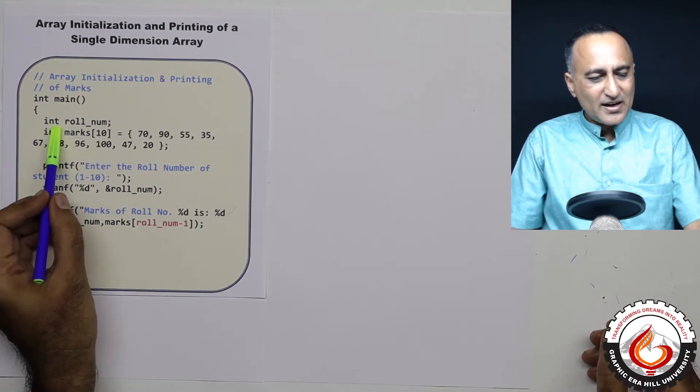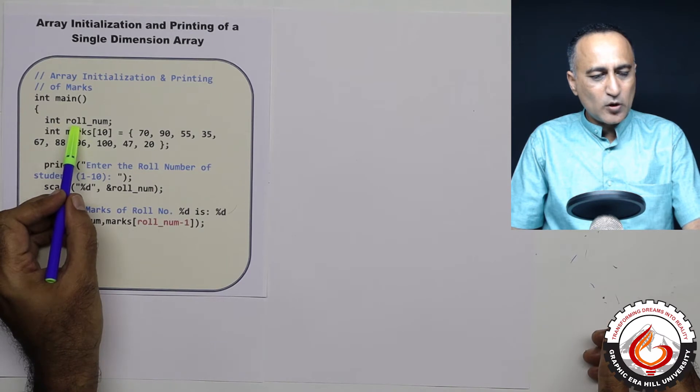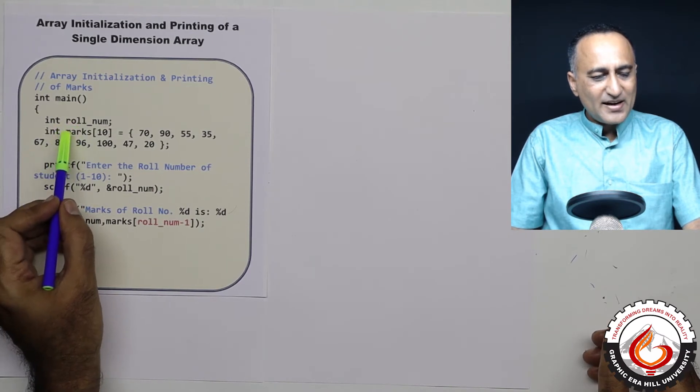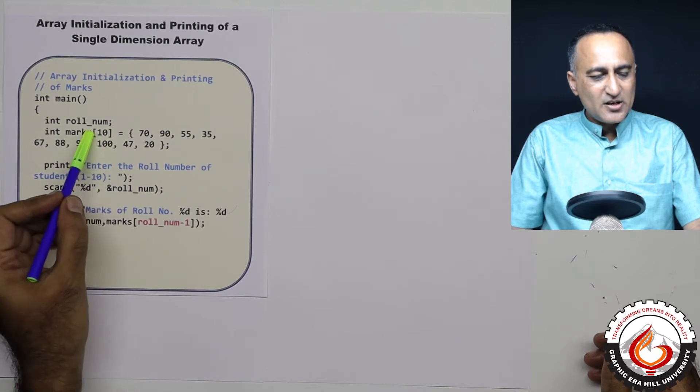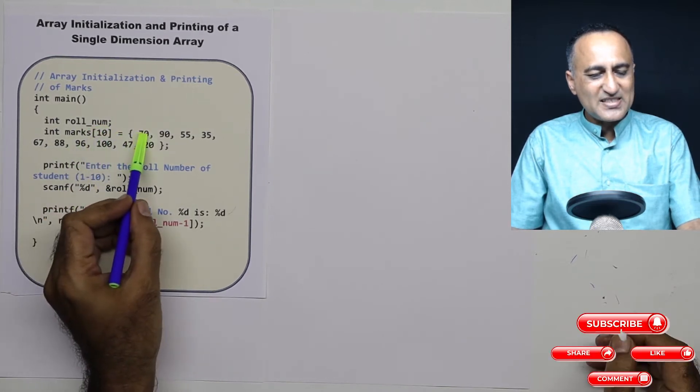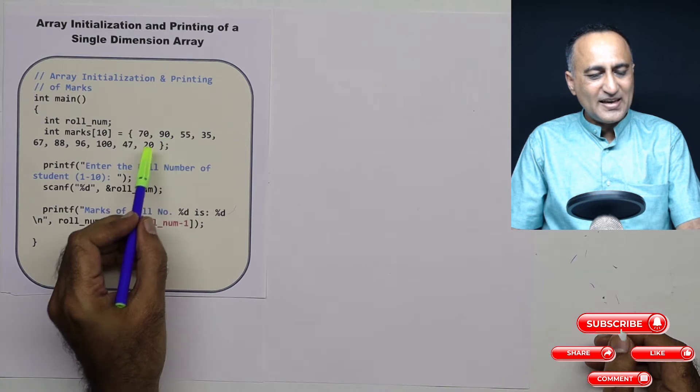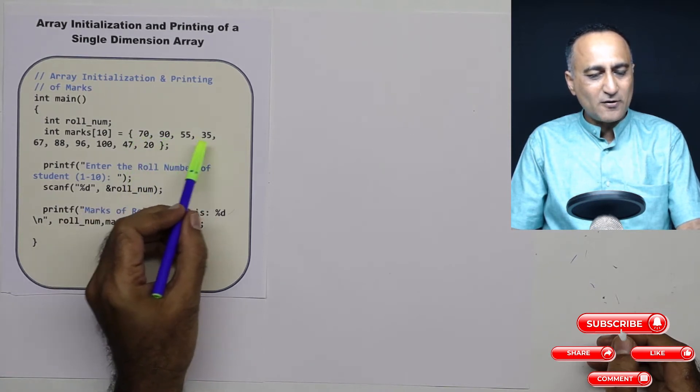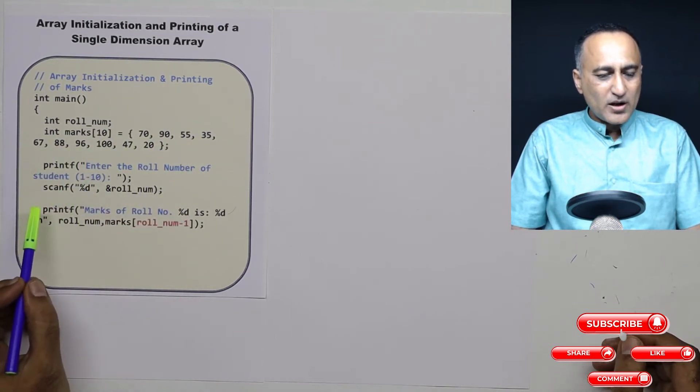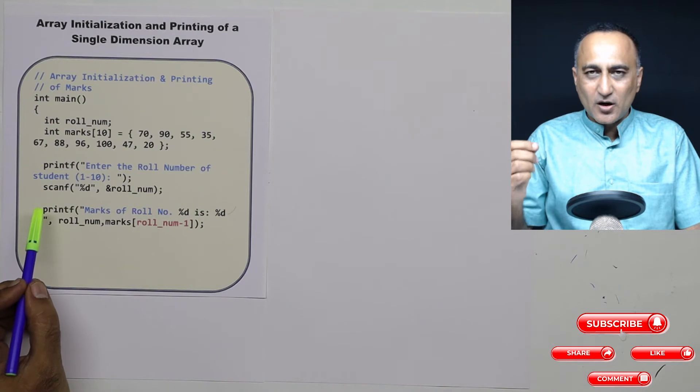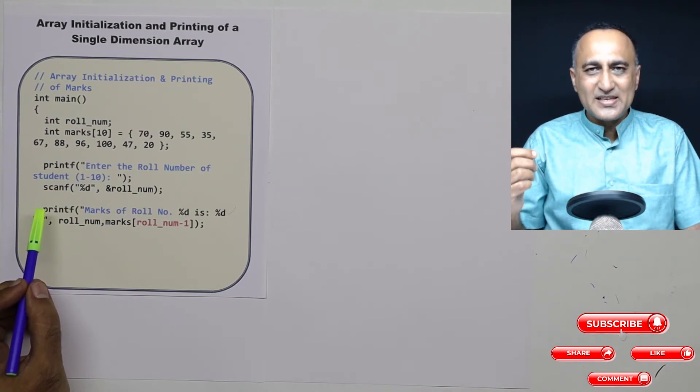So what I have done is I have declared an integer variable called roll_num. I have declared an integer array marks of size 10. So in the zero position 70 is existing, first position 90, and in the ninth position 20. So totally I have marks of 10 students. Now what I am doing is if a student gives me a roll number, I am going to write a program to print and tell him what his or her marks are in the subject of English.